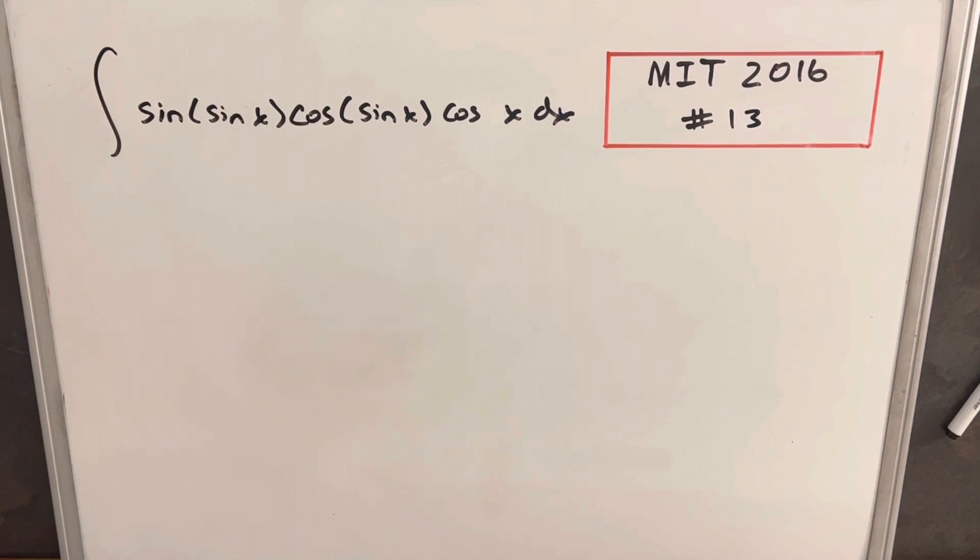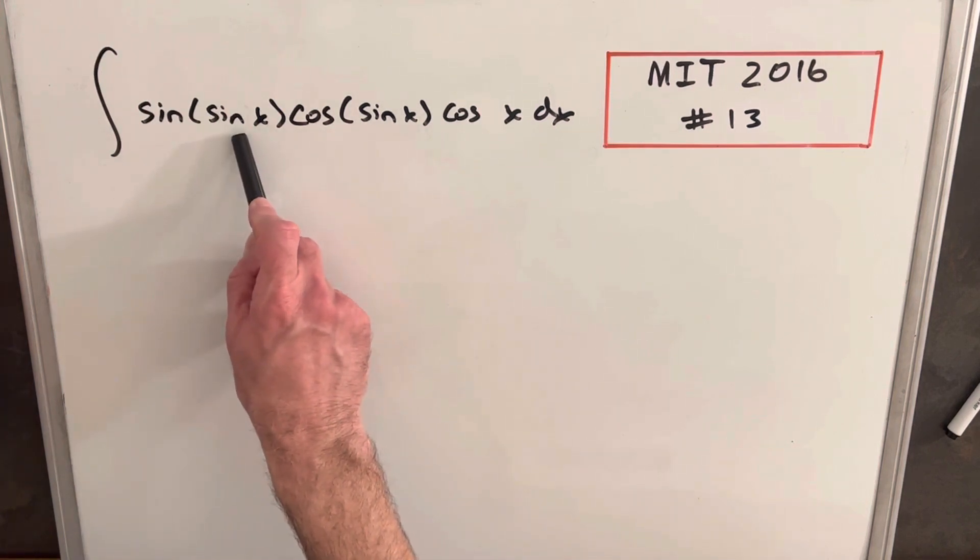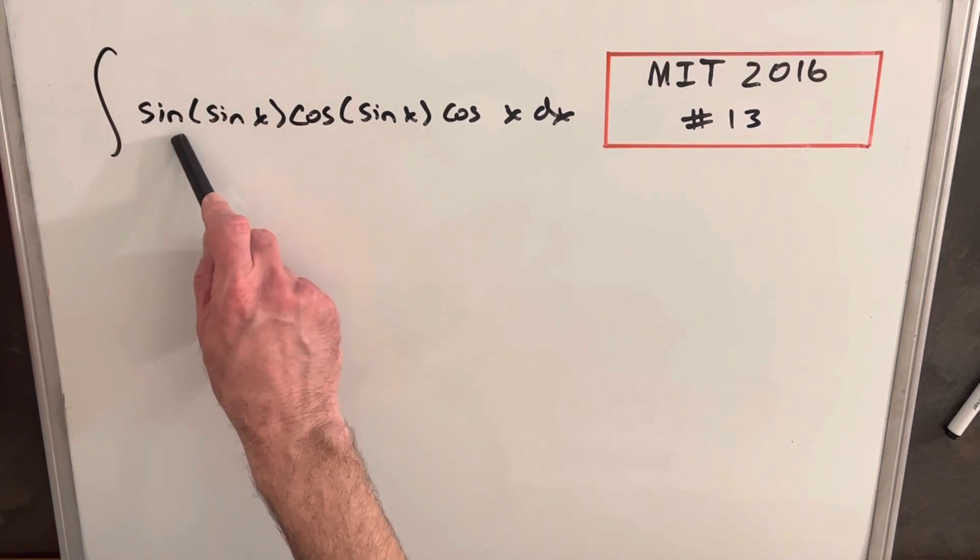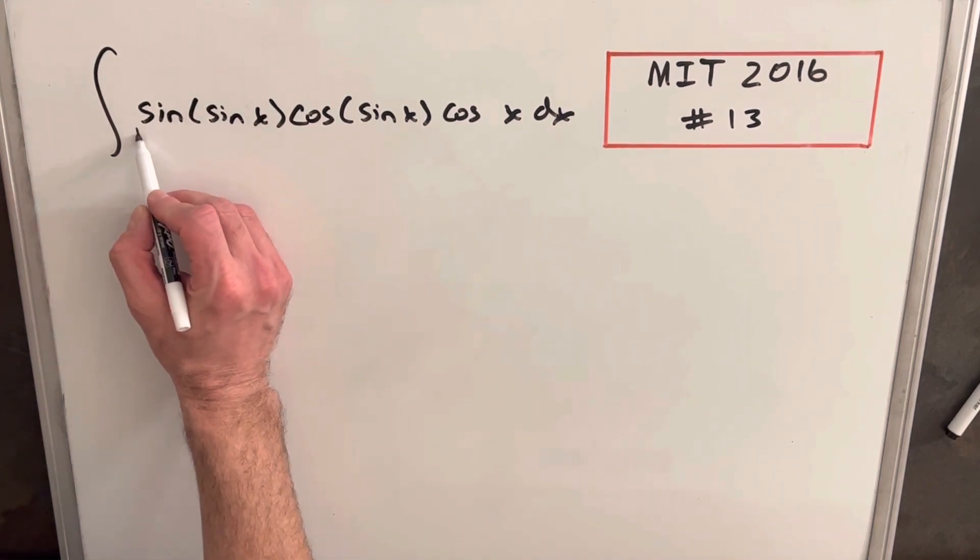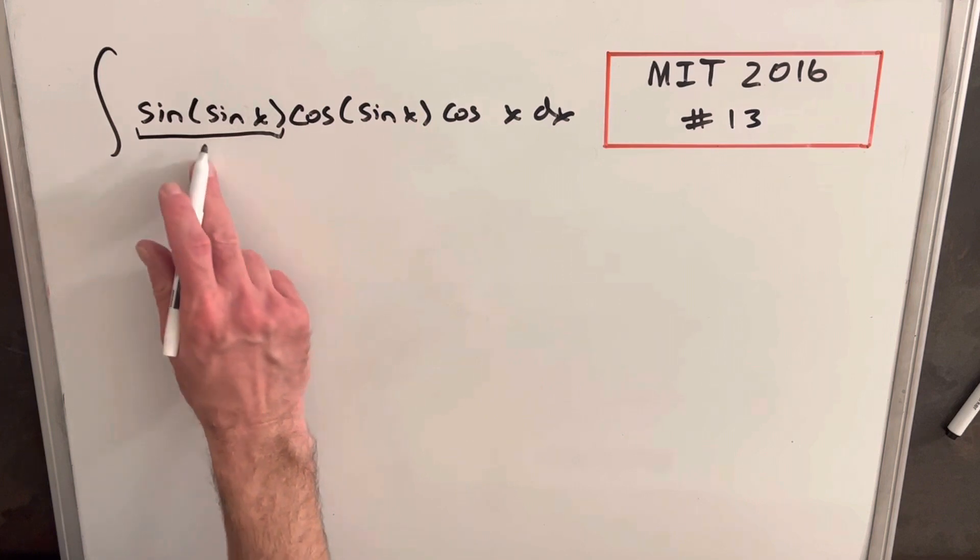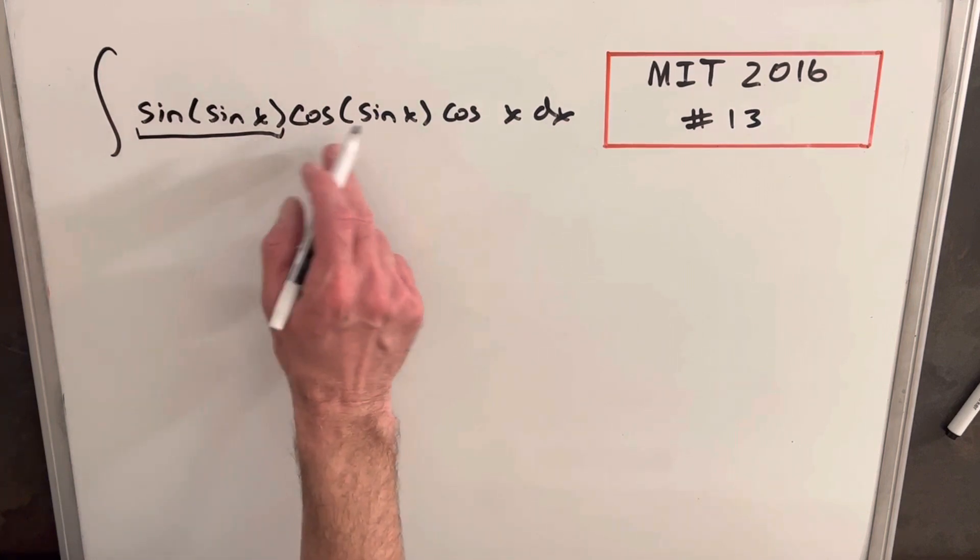My very first thought when I was looking at it was like, okay, we don't want to have a trig function inside another trig function. So yes, making a substitution u equals sin x would work fine and we could integrate it pretty easily. But what I thought might be a little better is if we notice, if we make this our u, the derivative of this is cos(sin x), but then the chain rule will give us a cos x.